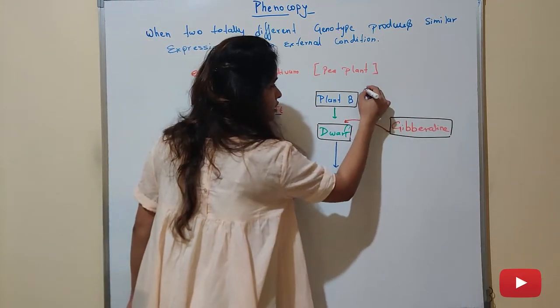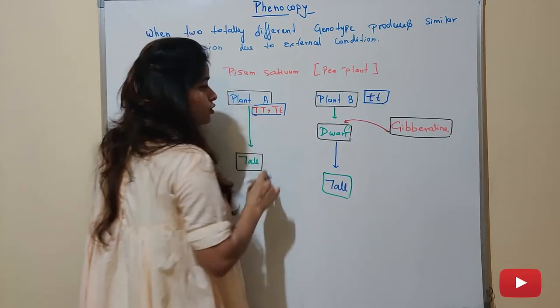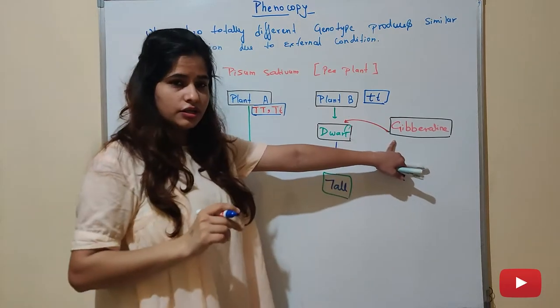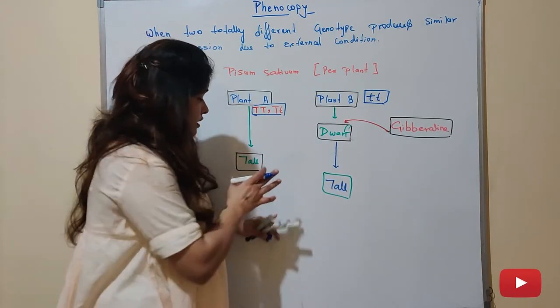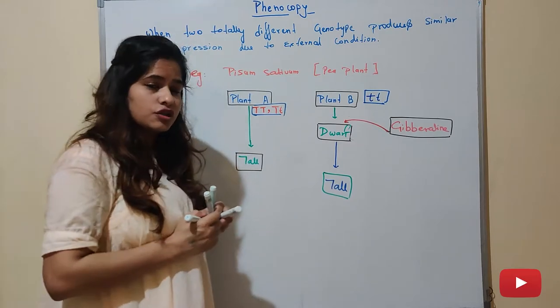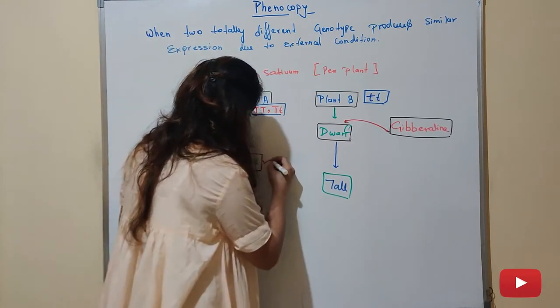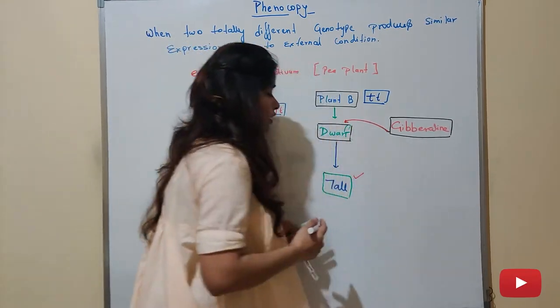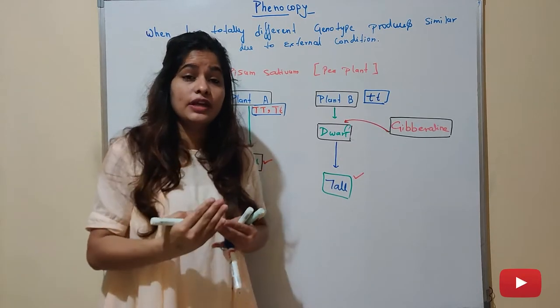When two different genotypes due to external conditions produce similar type of expression, because here this is also tall and this is also tall, that is called phenocopy.